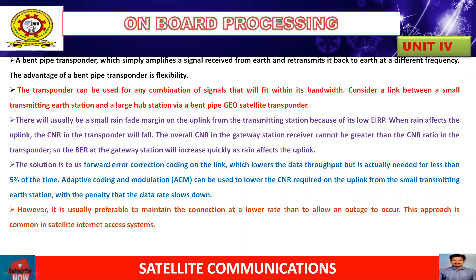For this illustration, there will usually be a small rain fade margin on the uplink from the transmitting station, because in this transmitting station we find a small low value of EIRP. When rain affects the uplink, the parameter CNR in the transponder will fall. With this influence, the overall CNR at the gateway station automatically receives the signal with a CNR ratio lower than in the transponder, and the resultant BER at the gateway station will increase quickly as rain affects the uplink frequency.